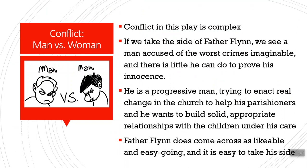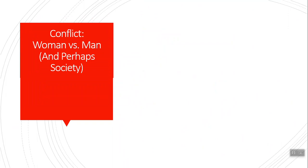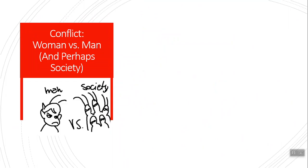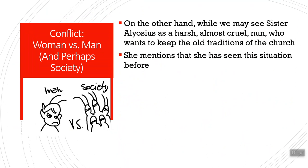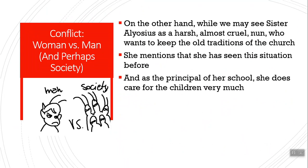On the other hand, if you read the play as woman versus man — possibly with Father Flynn representing that patriarchal society — Sister Aloysius seems harsh and almost cruel, just wanting to keep the old traditions. But she tells Sister James that she has seen this situation before. As the principal of her school, she cares for the children very much. Sometimes you have a parent who loves you and buys you ice cream, and sometimes you have a parent who loves you too much and has you eat spinach — she's that kind of person. She wants to give the kids spinach and not ice cream all the time.